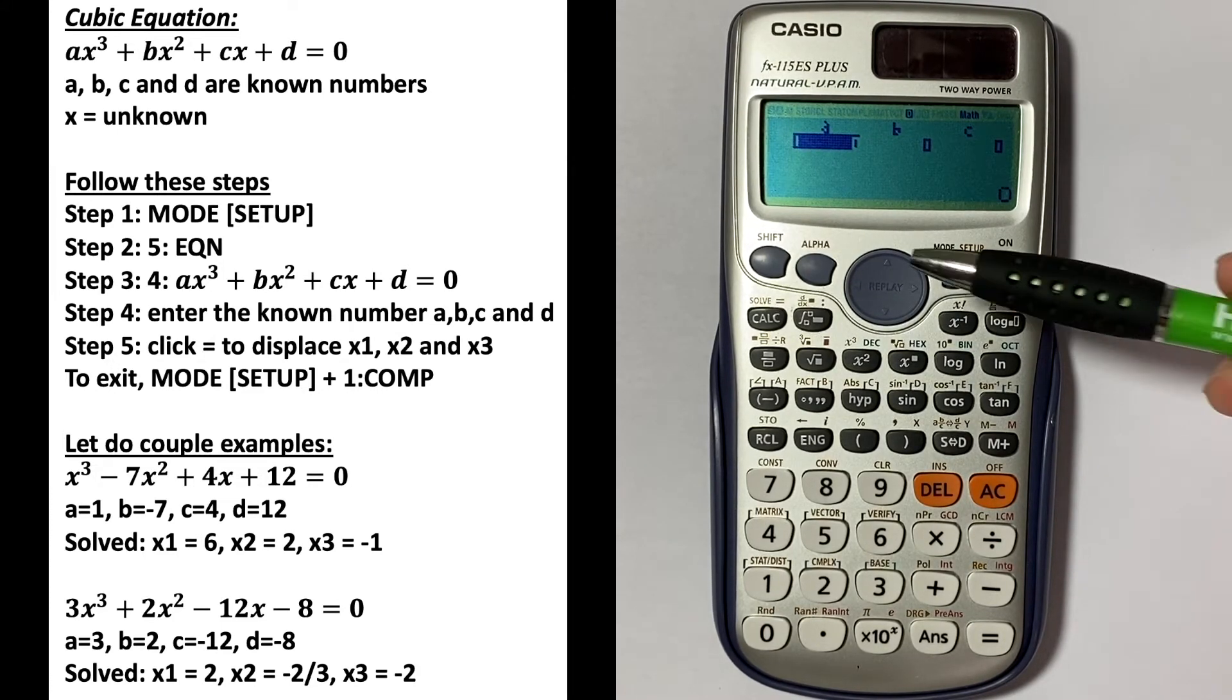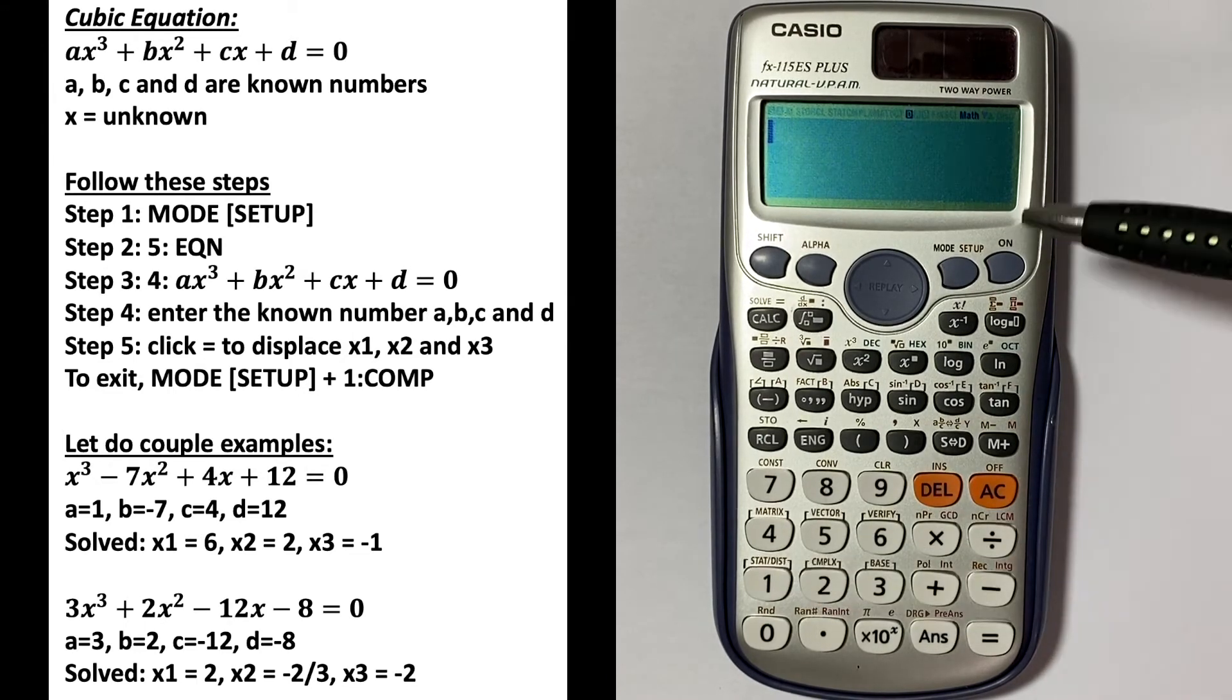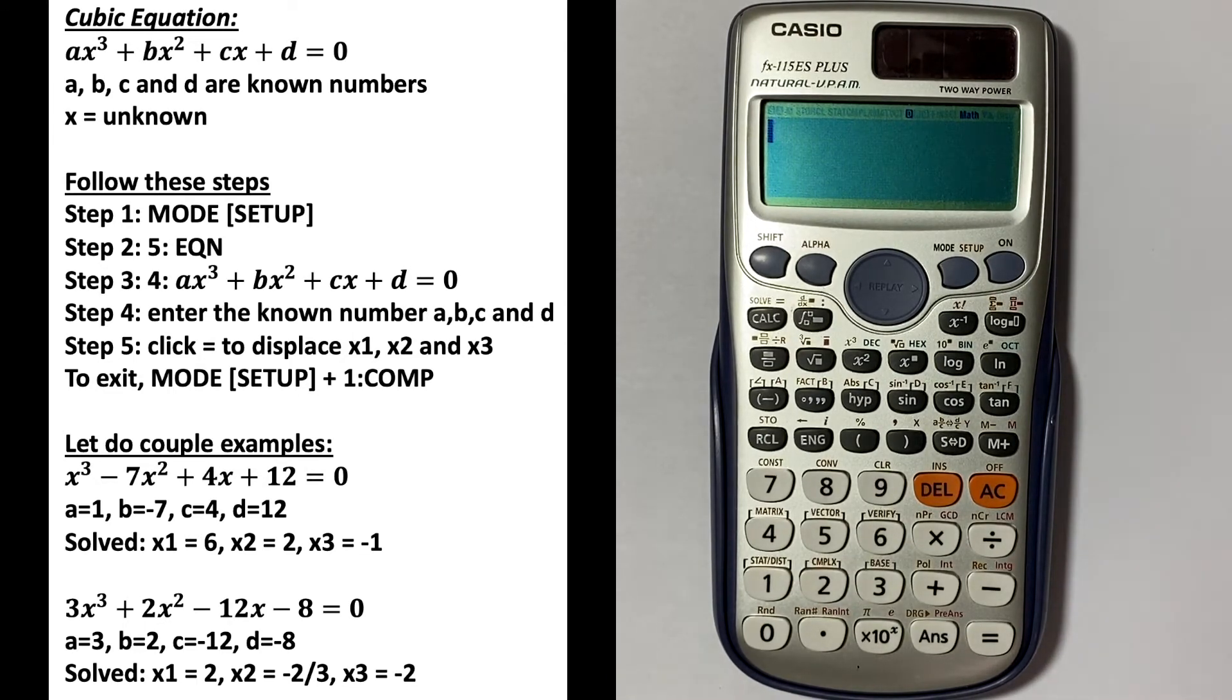Let's do a couple examples. Let's say we have x³ - 7x² + 4x + 12 = 0.